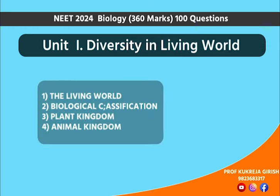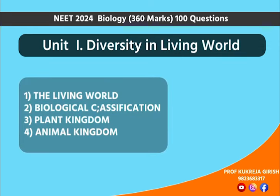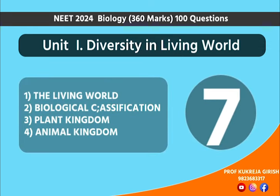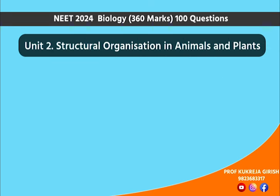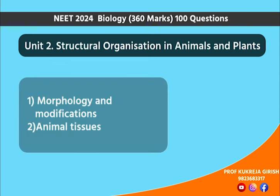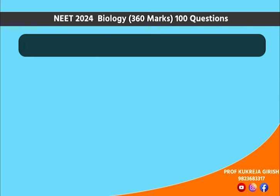Unit 1, the living world — 7 questions. Unit 2, the structural organization in plants and animals — 12 questions.